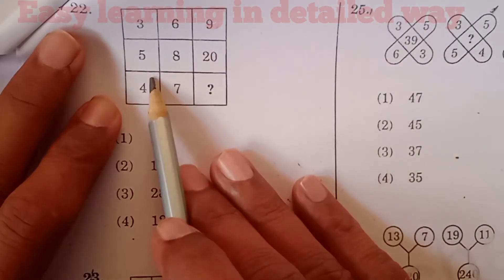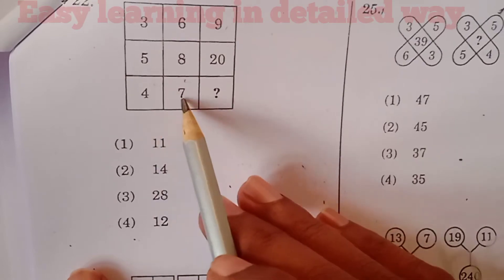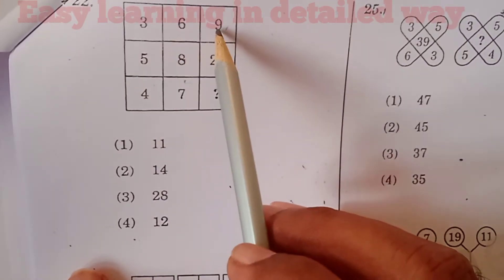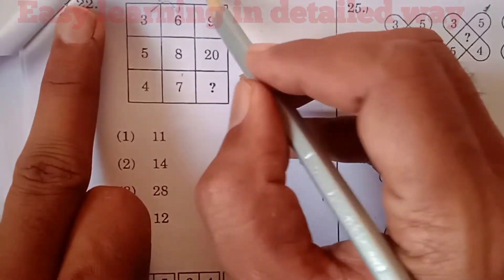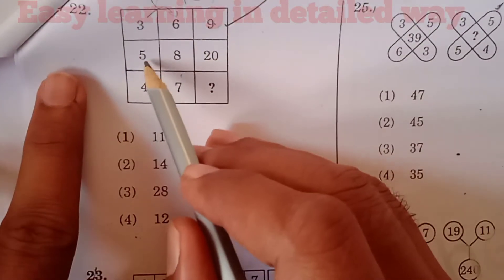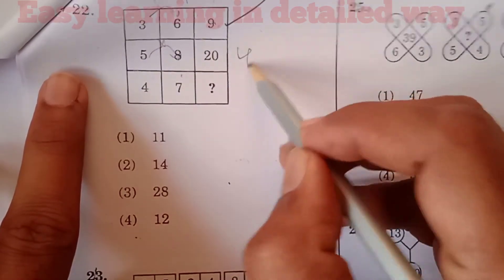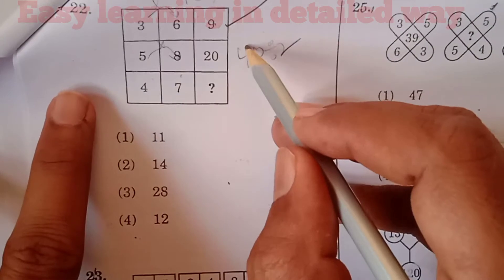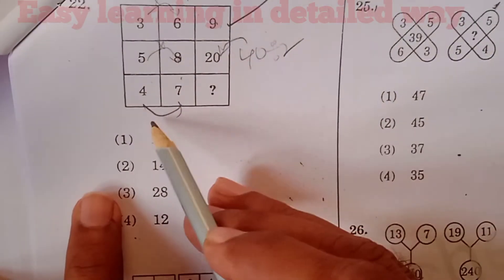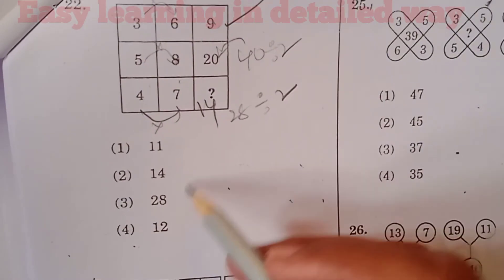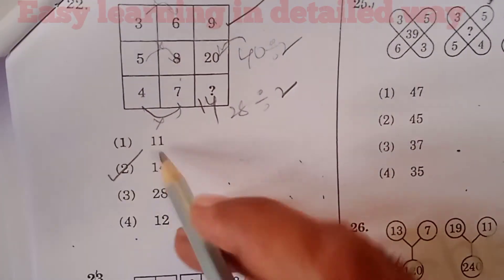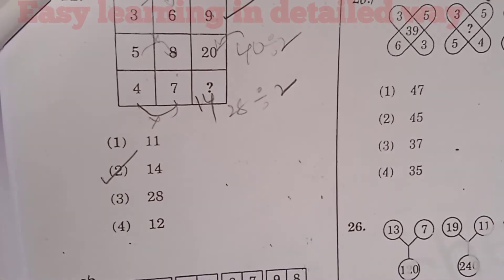Question number 22: We have 3, 6, 9 and 5, 8, 20. The pattern is: 3 into 6 is 18, 18 divided by 2 is 9. Similarly, 5 into 8 is 40, 40 divided by 2 is 20. In the same way, 4 into 7 is 28, 28 divided by 2 is 14. So the question mark is 14. Option 2 is the right answer for question 22.